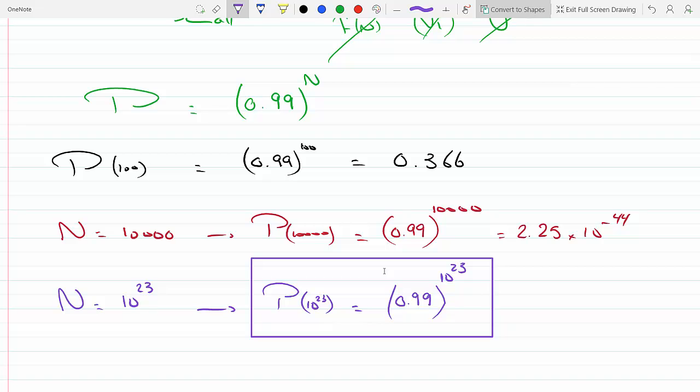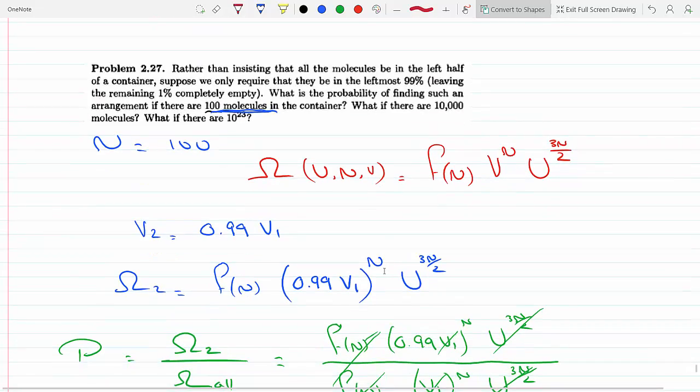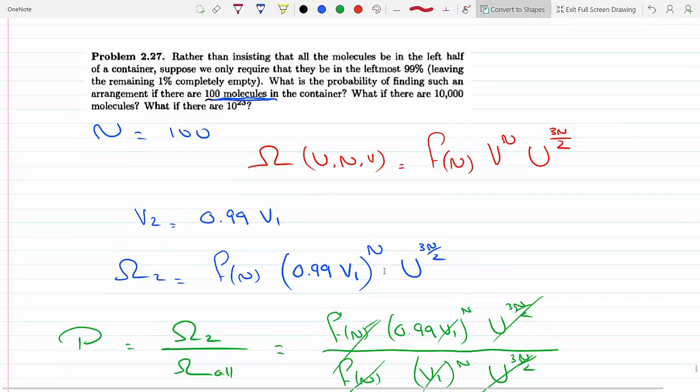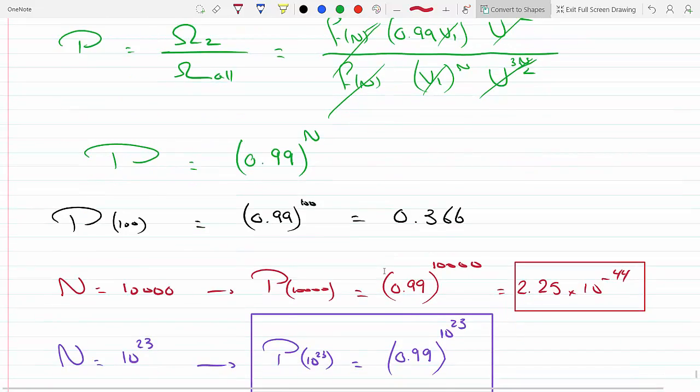The point is, as the number of molecules goes up, the less likelihood, the much slimmer of a probability that we're gonna see all the molecules in the 99 percent of the container while leaving one percent empty.